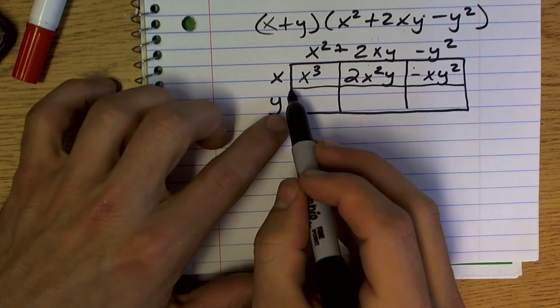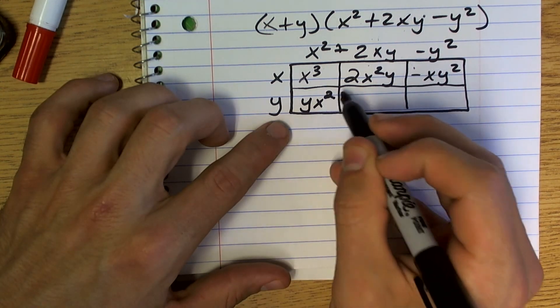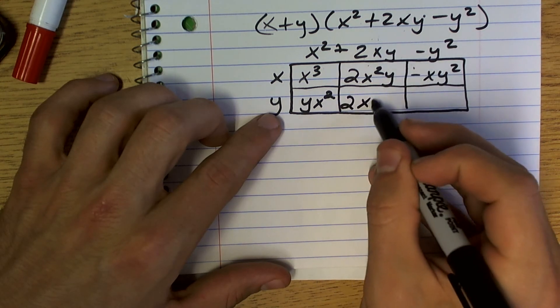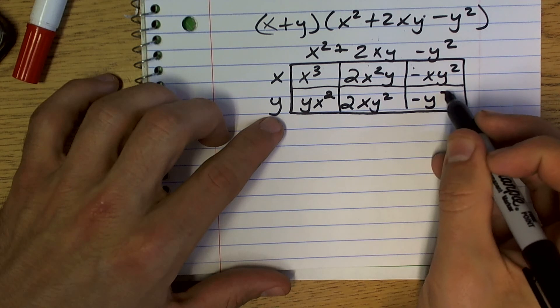Then do this thing. So this height versus this width is yx squared. y times 2xy is 2xy squared. y times negative y squared is negative y cubed.